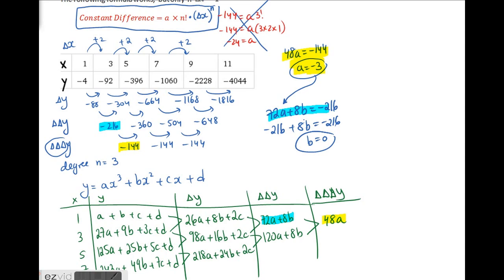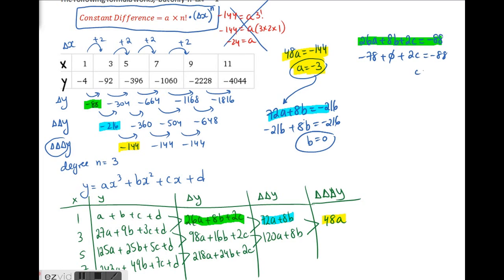Then we do the same with the first difference column. Taking the first entry of the symbolic first differences and setting it equal to the first numerical first difference, negative 88, then plugging in the known values of a and b, and solving for c yields c equals negative 5.